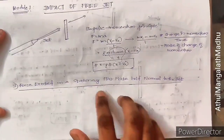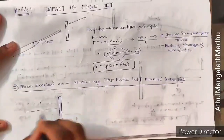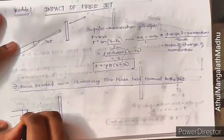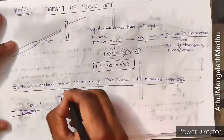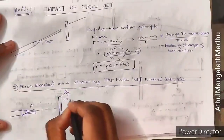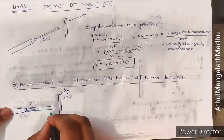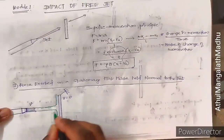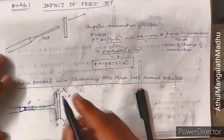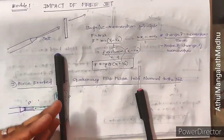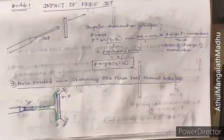The first case is the force exerted on a stationary flat plate held normal to the jet. The plate is held normal to the water jet. Water comes out of the nozzle with initial velocity V. The plate is stationary, so its initial velocity is zero. The flow comes, hits the plate, and gets divided into two parts going in opposite directions along the plate surface.